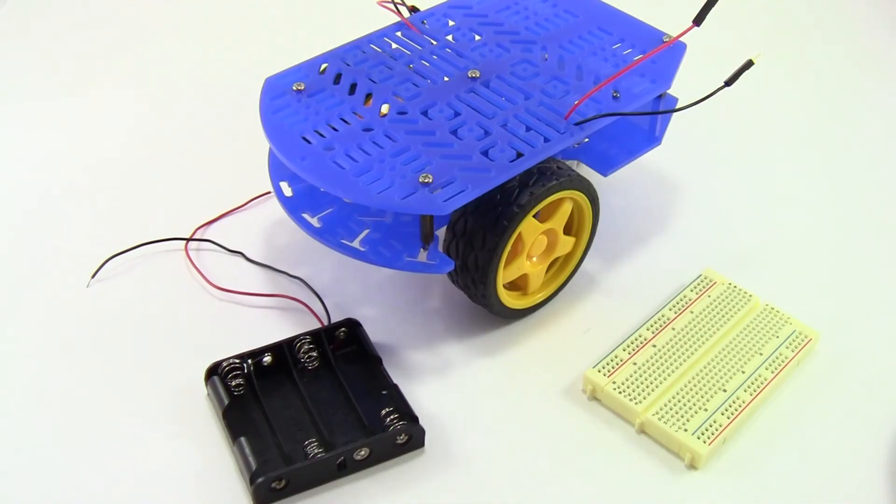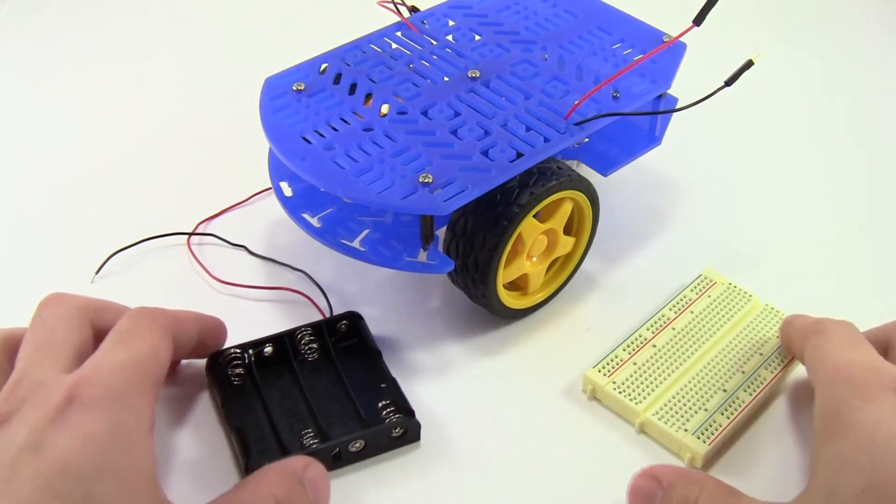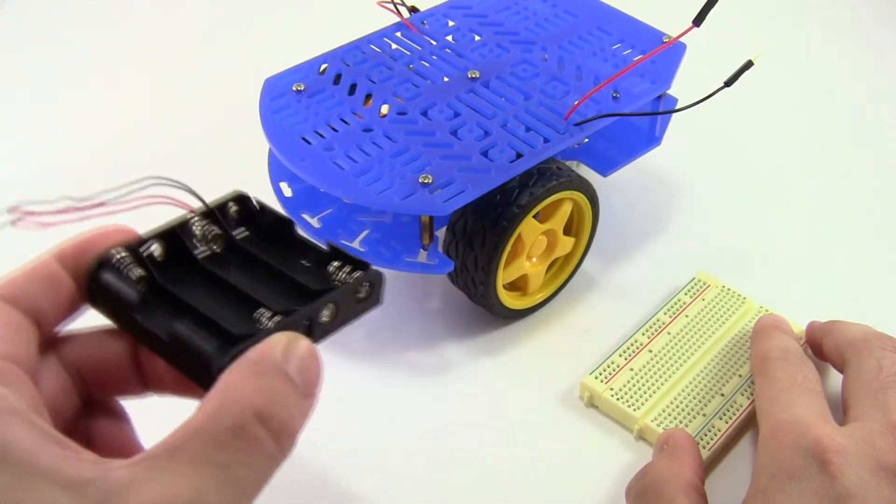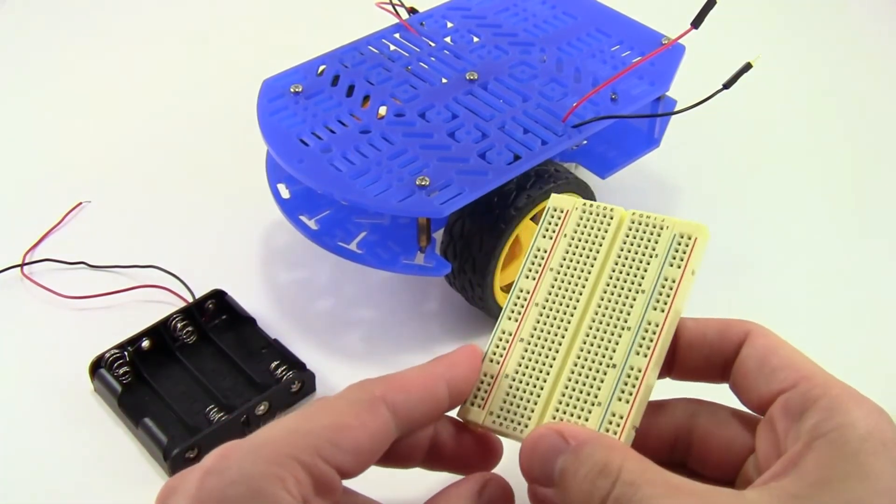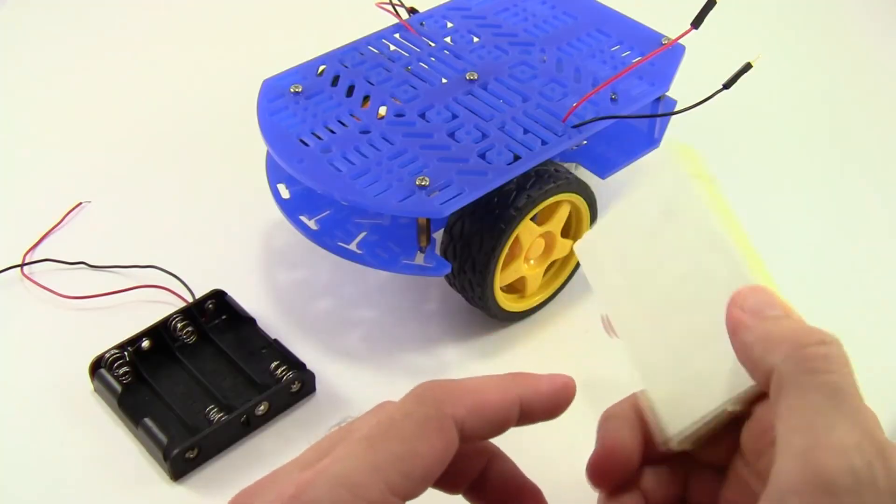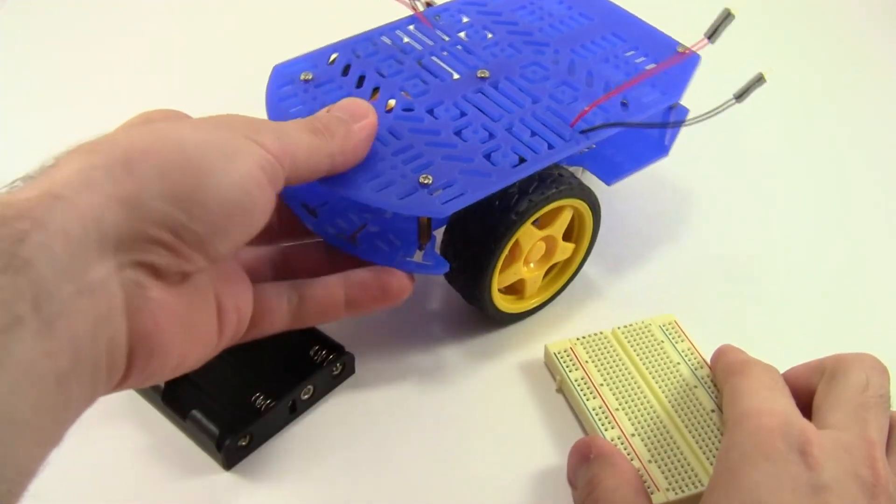Now, the last thing you'll need to do is add the battery holder, which is this black plastic piece on the left here, and the breadboard, which allows you to build electronic circuits to your chassis. If you don't know what a breadboard is or you've never seen one before, don't worry about that now, we'll explain it in the next video.